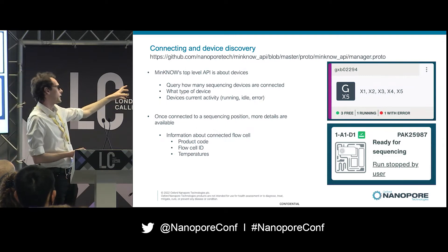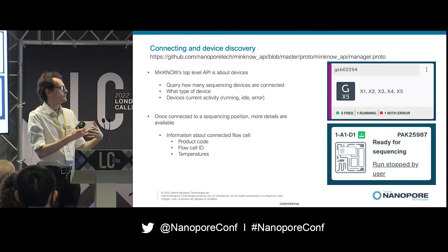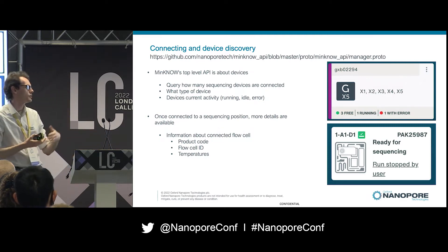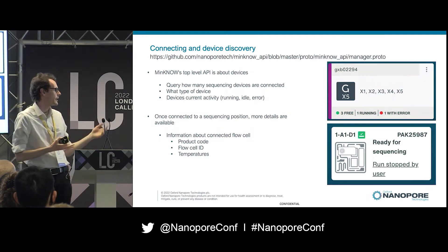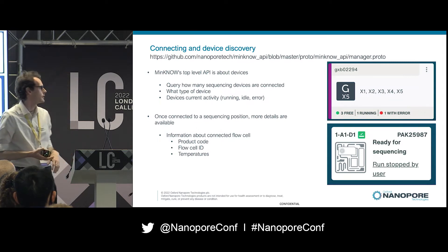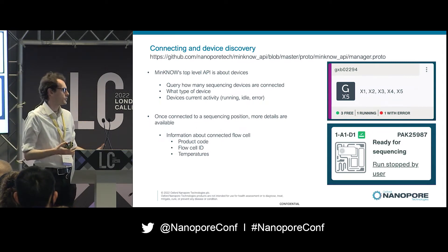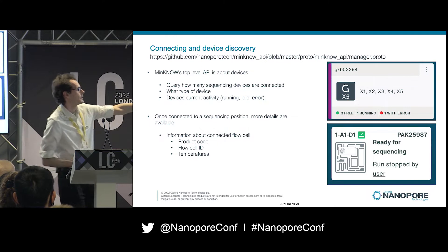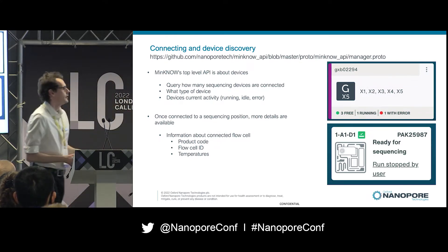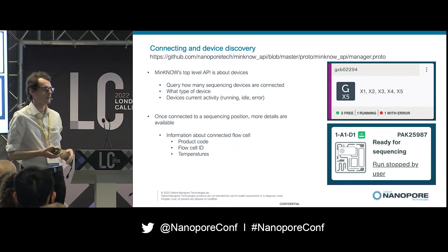Once you're connected, you can query more position-specific information — for example, you could get product codes back from connected flow cells, query temperatures on connected flow cells, flow cell IDs, and that sort of thing. What's being displayed in the UI is all coming via that API, including the type of the position connected.